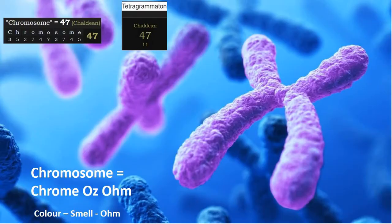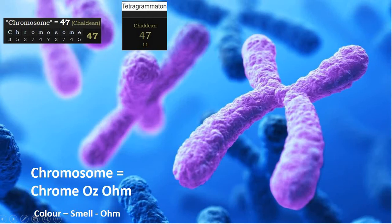Chromosome is 47 in Chaldean, matching the Tetragrammaton. You can break it down into chrom, os, and om. Element chromium means color, and element osmium means smell. Om is the unit of electrical resistance.